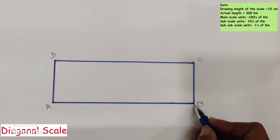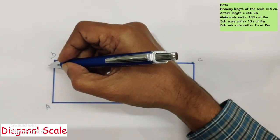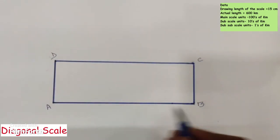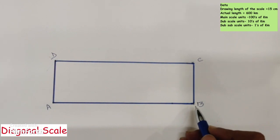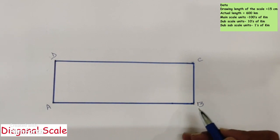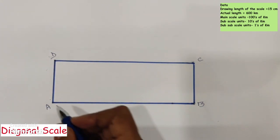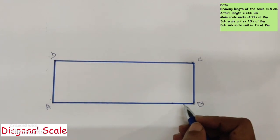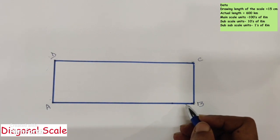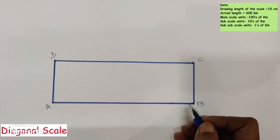Here AB is the length and AD is the breadth of the scale. The length AB equals 15 centimeters, which represents the actual length of 600 kilometers. The main scale units are in terms of hundreds of kilometers, so we need to divide the AB length into six equal parts, where each part represents 100 kilometers.